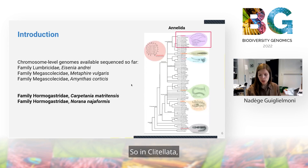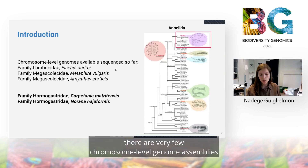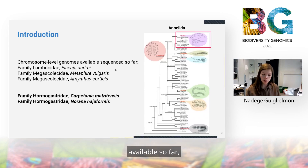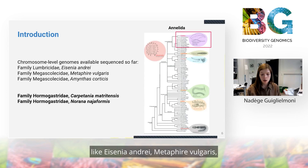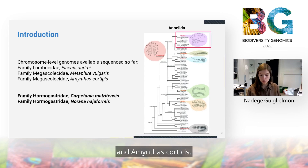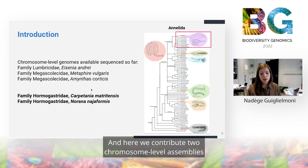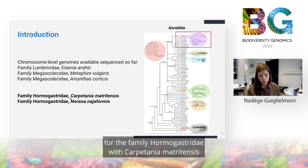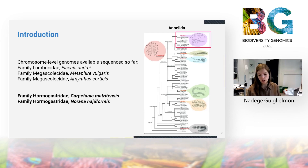In Clitellata, there are very few chromosome-level genome assemblies available so far — for example, Aceneandrea, Metaphoria vulgaris, and Amintoscortesis. Here we contribute two chromosome-level assemblies for the family Hormogastridae: Carpetania metritensis and Norana negeiformis.